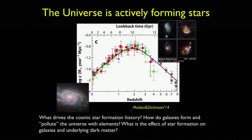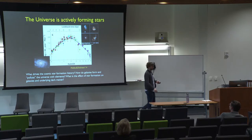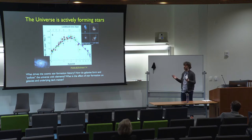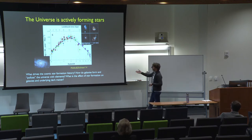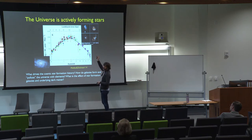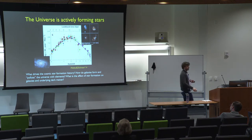What I wanted to know in my research — and still want to know — is what drives the star formation history of the universe. Why do things behave like this? How do galaxies form? How do they pollute the universe with heavy elements? All of the heavy elements except hydrogen, helium, and a trickle of other stuff are basically formed in stars and then ejected out. I would also like to know what is the effect of star formation on galaxies as they evolve and on their underlying dark matter — that last question is the key of what I actually do in daily life.